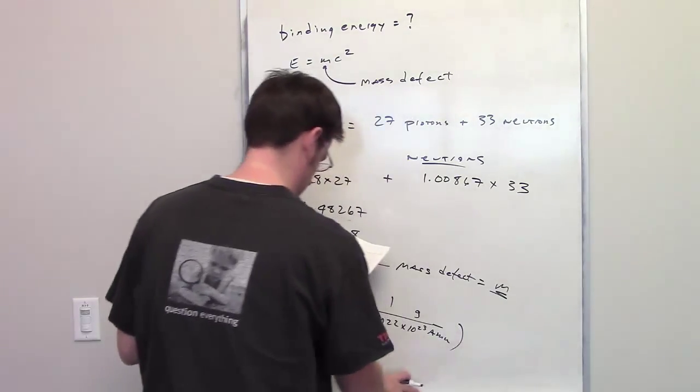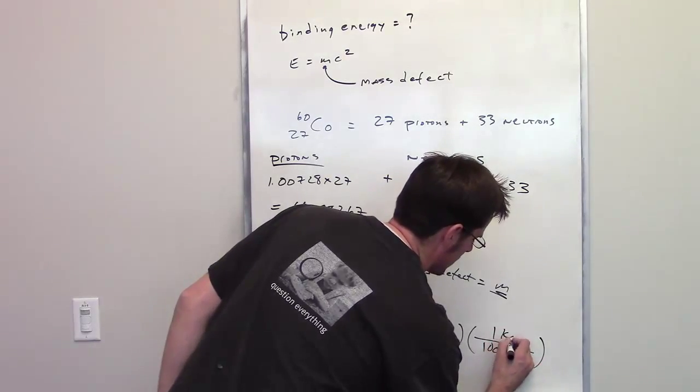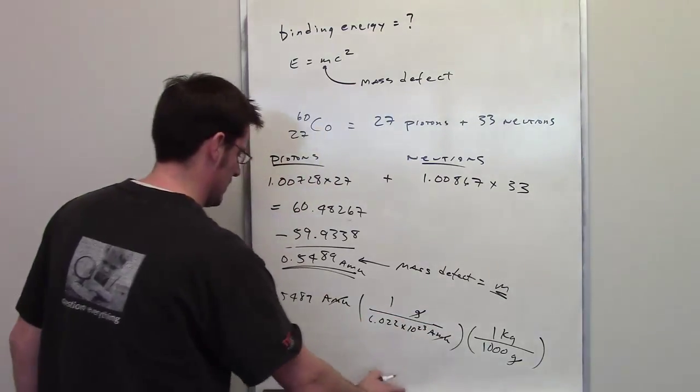And then of course, there are 1,000 grams in one kilogram. So grams cancel each other out, amus cancel each other out, and I'm left with kilograms.